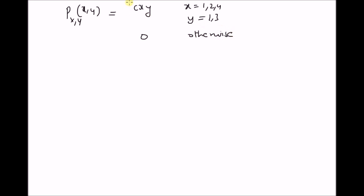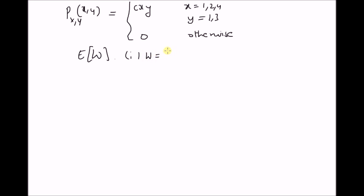Given this joint probability mass function, our goal is to find the expected values of random variable W: case one in which W = y/x (the ratio), and also we want to find the expected value of W when it is equal to the product x·y.